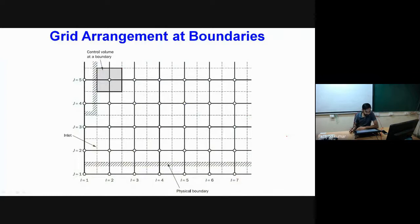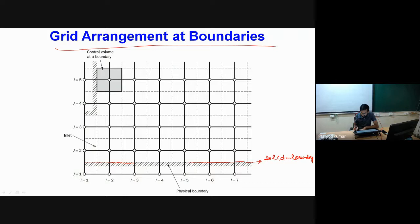Let me give the first idea about the arrangement of grid structure at the boundaries. Here, the hatched line represents a solid boundary. One solid boundary is here, and another solid boundary is here. The dashed line shows where our actual simulation domain is starting — this is our inlet boundary, and the bottom is a physical solid boundary which we can consider as a wall.